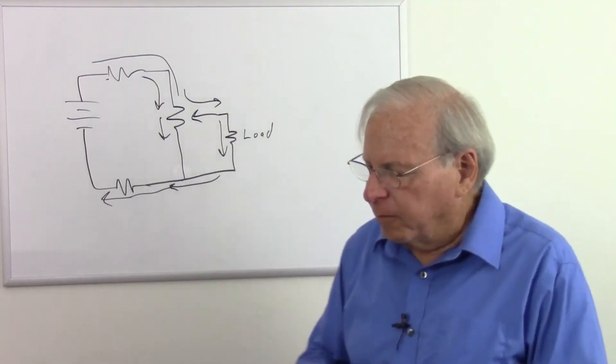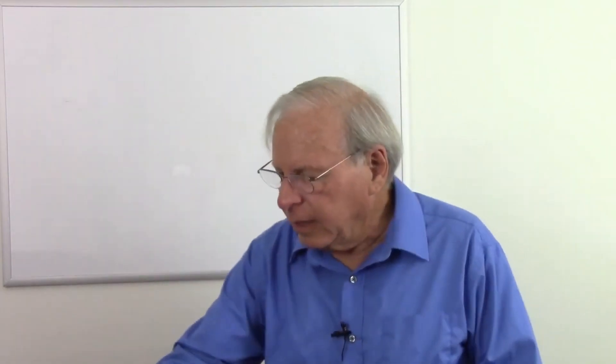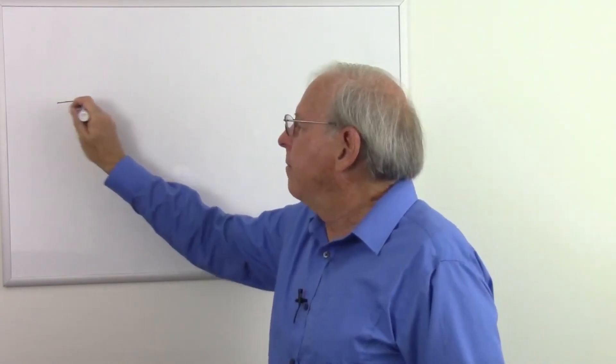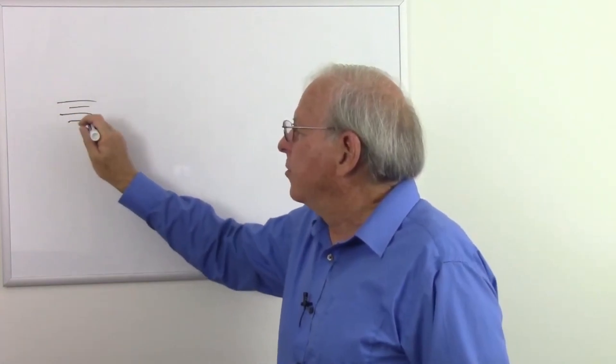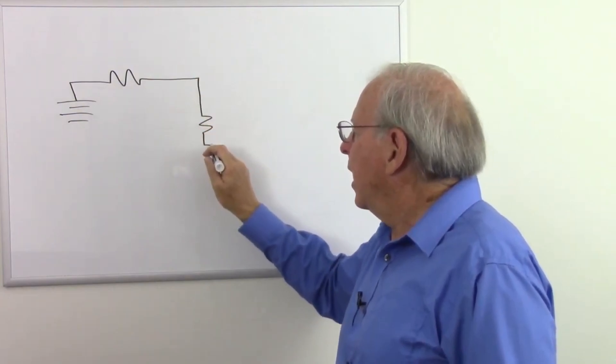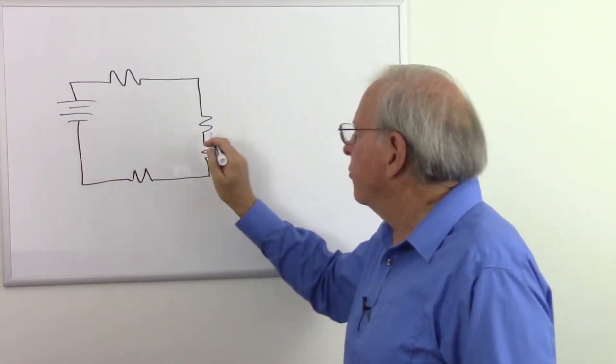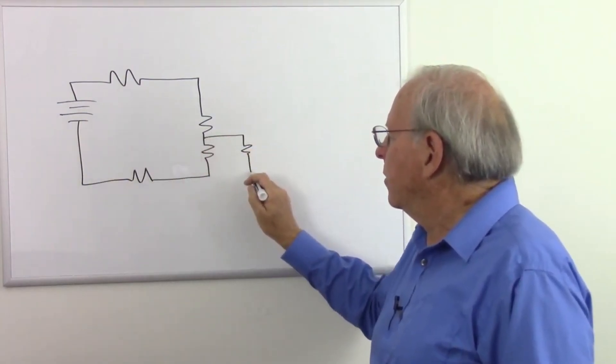This might be a little confusing, so I want to make a point here. Let me just redraw this. And remember that the potentiometer acts. Let's go ahead and draw all the components in here. I'm drawing the potentiometer as two separate resistors. And then this will go off to our third one.